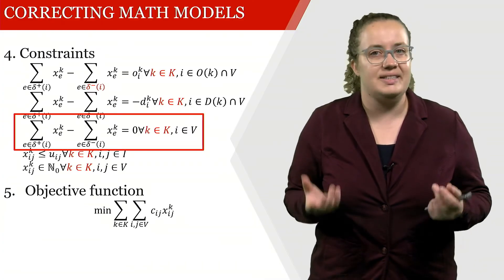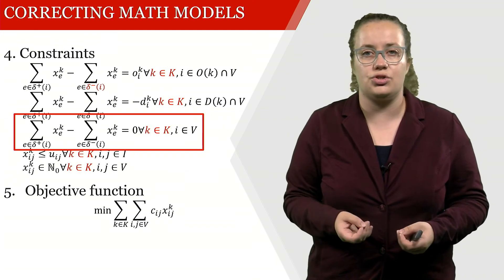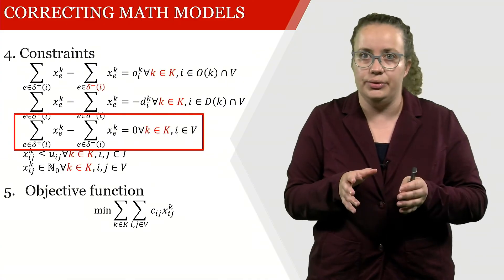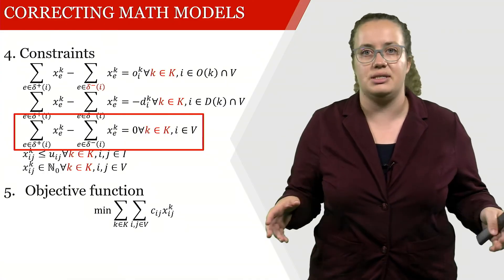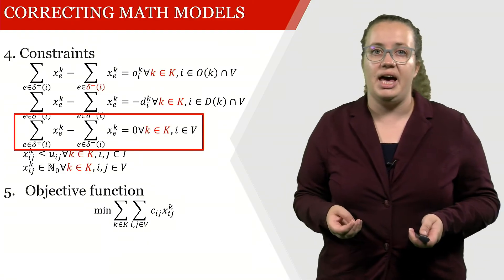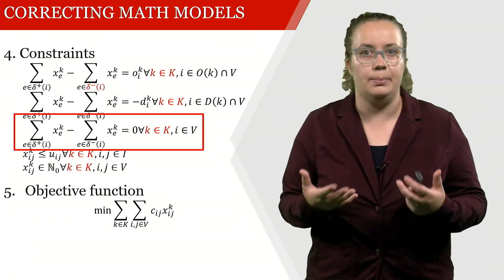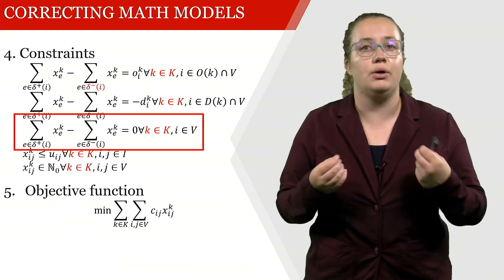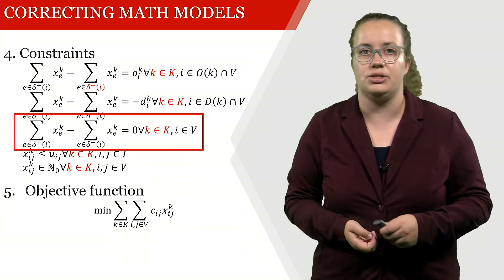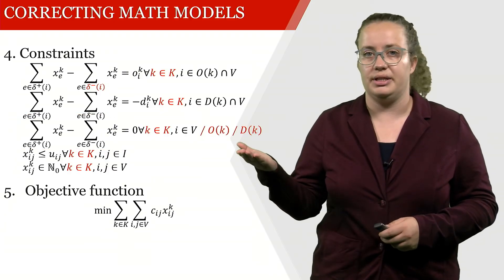Also, it doesn't make sense to define this constraint for Rome because Rome is not an intermediary node. Rome is a terminal node of this flow. So what we have to do is we have to remove, for example, Rome - so for example, the origin locations - and simultaneously we obviously also have to remove the destination locations. So we're doing this here.